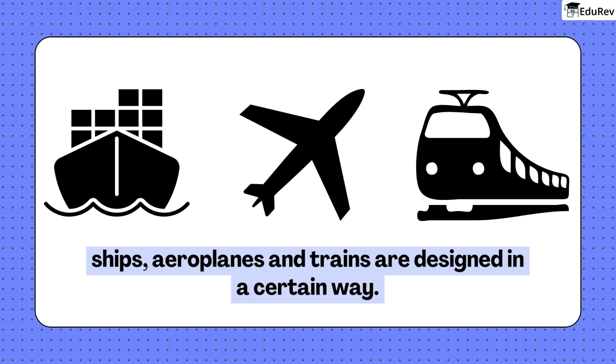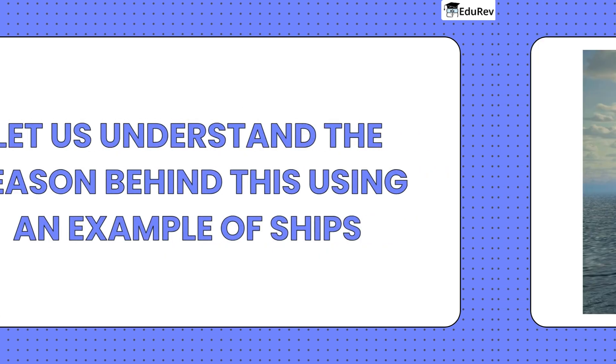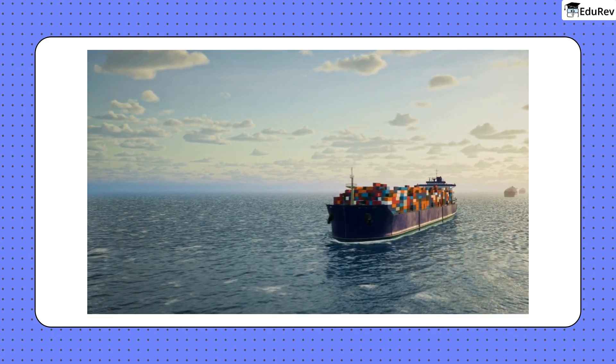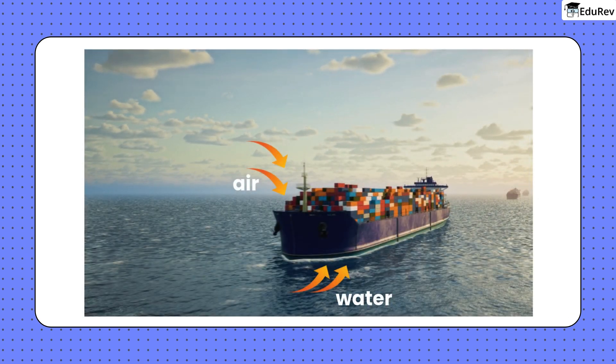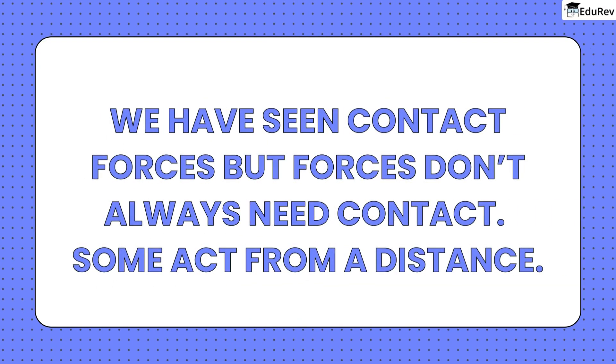You might have noticed ships, aeroplanes, trains are designed in a certain way. Let us understand the reason behind this using an example of ships. When a ship moves through water, it faces resistance from both air and water. This resistance is called drag in air or water resistance in water.